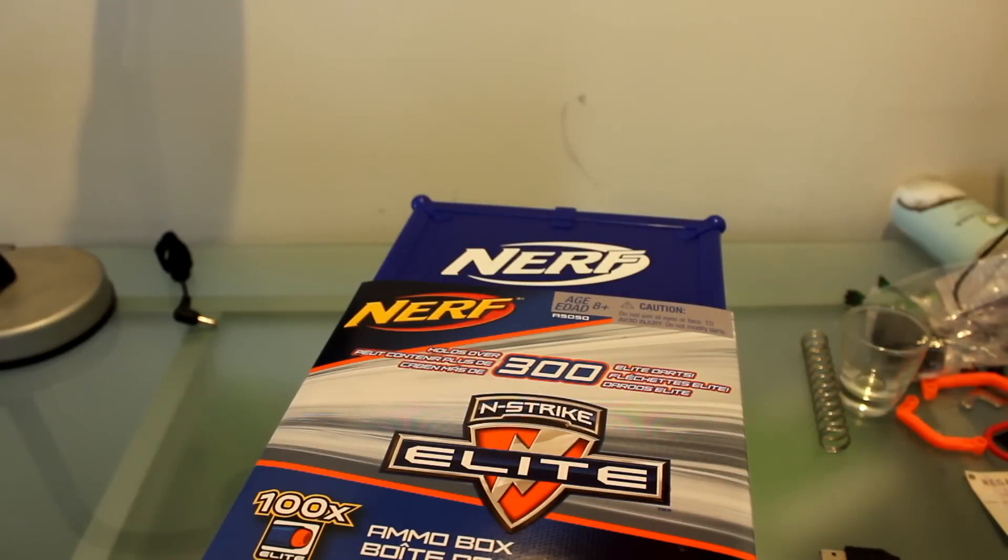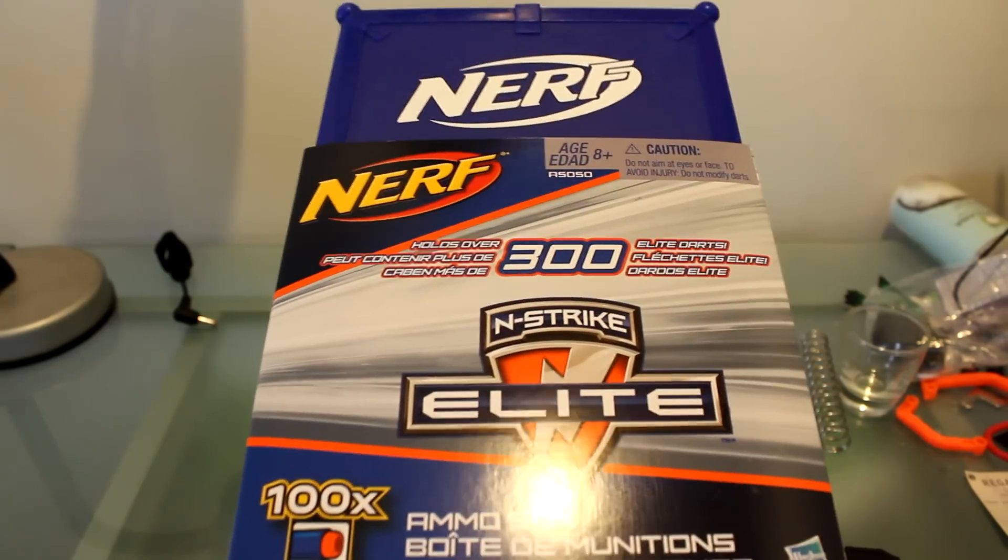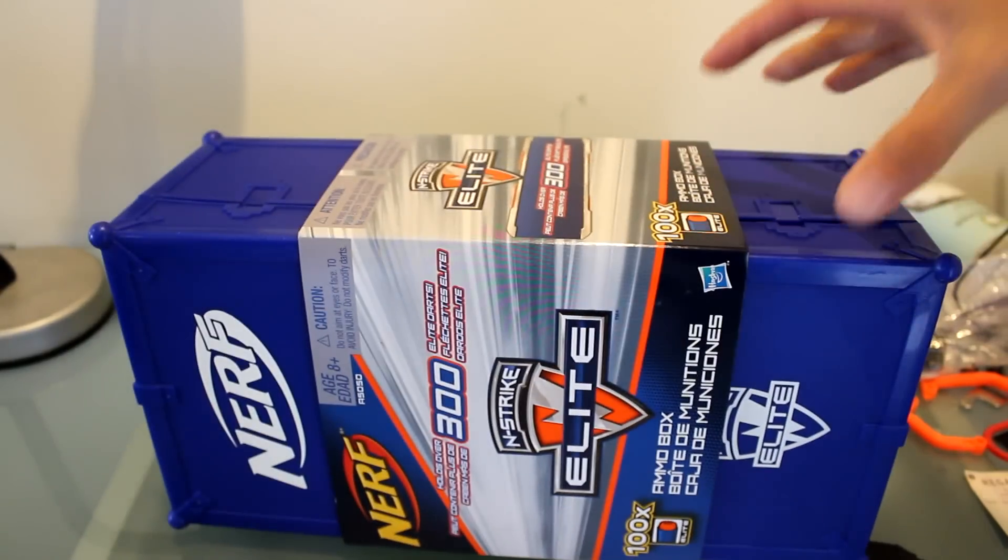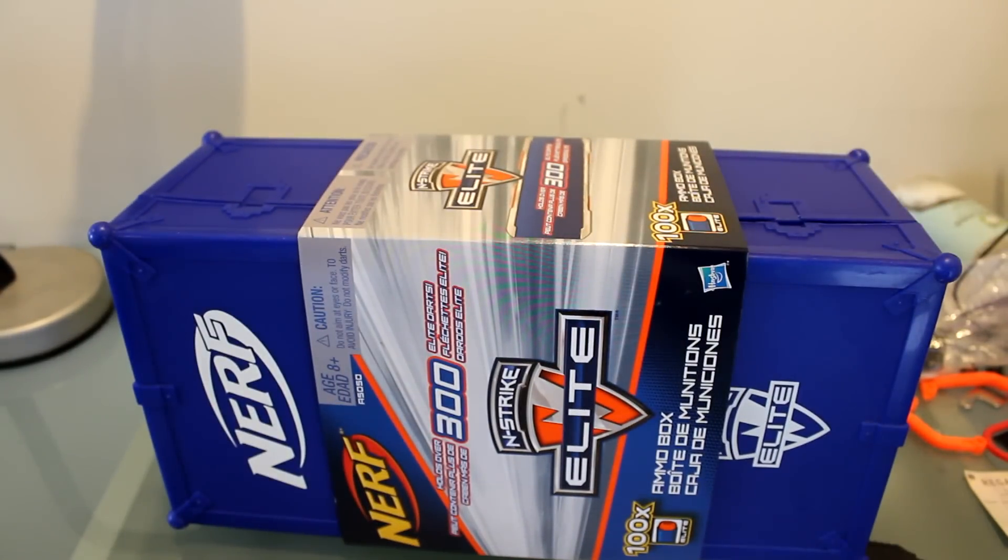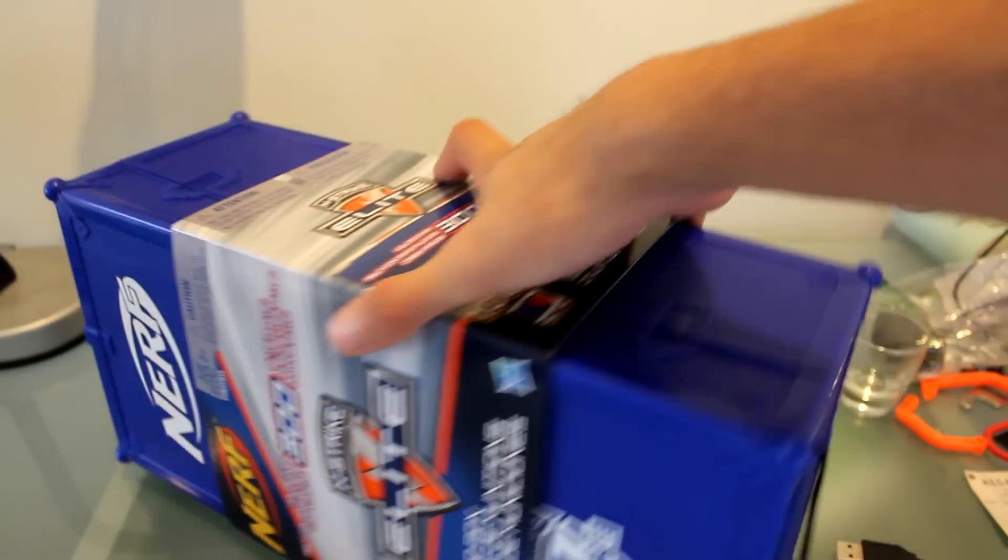So again, this is the new Elite Ammo Box. It kind of replaces the old one that came with whistlers and streamlines. This one comes with 100 elite darts and holds up to 300 darts, so this should be pretty good.